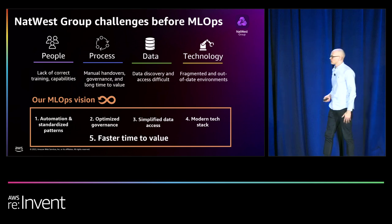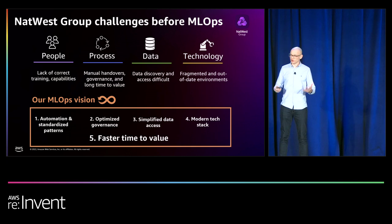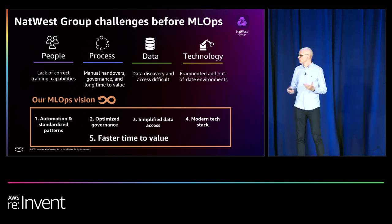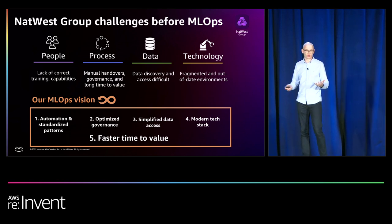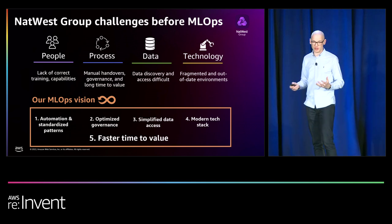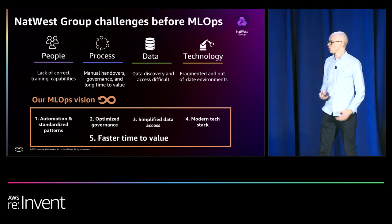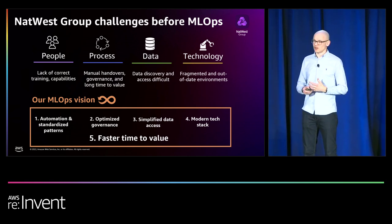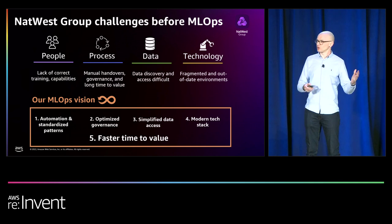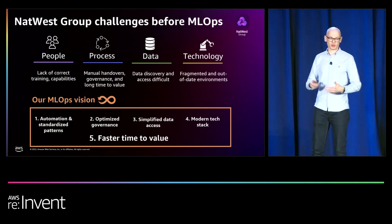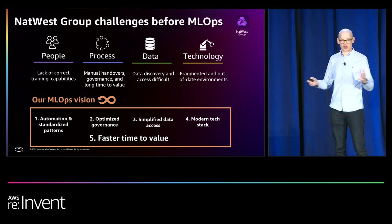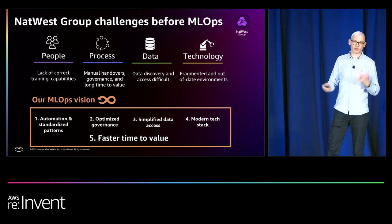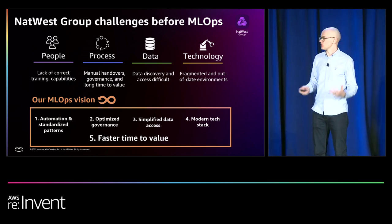The challenges we faced before ML operations can be placed into four categories: people, process, data, and technology. We have talented people who historically lacked the right training and support to work with cloud and in a software development mindset. On process, we've grown organically over time, leading to legacy processes that get in the way of innovation. I've seen data scientists working in one system hand over to engineers in another to implement in production, leading to frustration on all sides. Data is often siloed and difficult to discover, and our technology state was often fragmented, out of date, and not attractive to recruit next-generation staff.